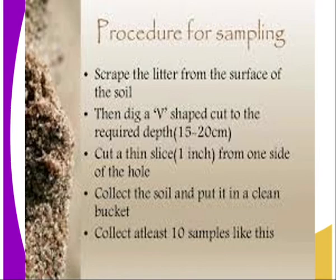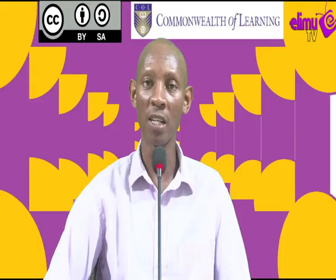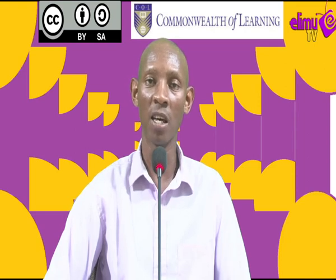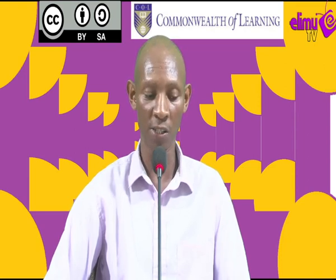After doing that, mix the soil from the 10 stations thoroughly. Then pack the soil into a polythene paper. Write the parcel number — that is, the land number — and the address of the farmer. The soil is then ready to be sent to the laboratory for soil testing.